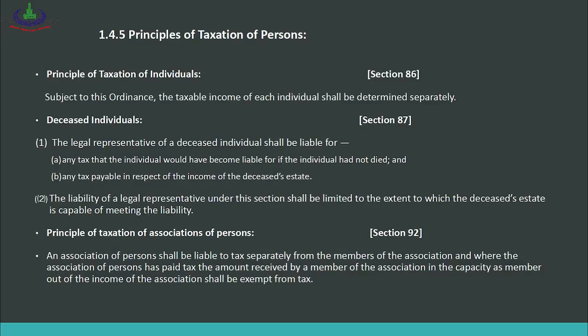Any tax payable in respect of the income of the deceased's estate is also considered payable. Sub-section 2 states: the liability of a legal representative under this section shall be limited to the extent to which the deceased's estate is capable of meeting the liability. When a person passes away, their legal representative — which could be their children or nominated persons — will pay, and they are responsible only to the extent of the person's wealth or assets.